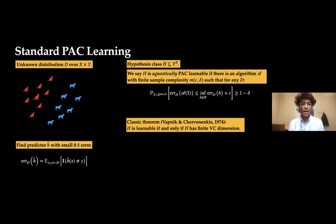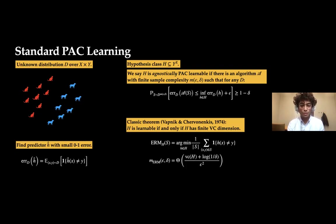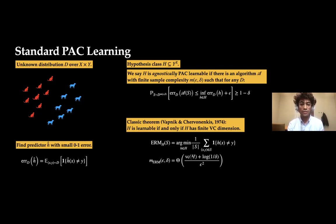We have a pretty good understanding of learnability in the standard non-robust setting. A classic theorem by Vapnik and Chervonenkis from the 70s shows that a hypothesis class H is learnable non-robustly if and only if the VC dimension is finite. Furthermore, we know that doing ERM — empirical risk minimization, picking a predictor that minimizes misclassification error on training examples — suffices for learning. The VC dimension exactly characterizes the sample complexity in the non-robust setting.